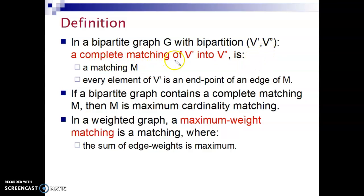Remember that a bipartite graph G separates the nodes into two different sets V prime and V double prime. Complete matching of V prime into V double prime is a matching M in graph G. So the end nodes of the edges has to be separate, and also, every element of V prime is an endpoint of an edge of M.